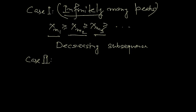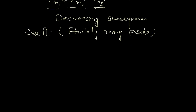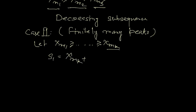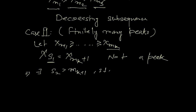Case 2: we have only finitely many peaks — this includes the possibility of zero peaks. Let xmk be the last peak. Consider the term just after it, xs1, at index mk+1. This term xs1 is not a peak, so there exists some s2 greater than mk+1 such that xs1 is strictly less than xs2. Again, xs2 is not a peak, so we get s3 satisfying the same inequality, and so on. In this way we obtain an increasing subsequence.